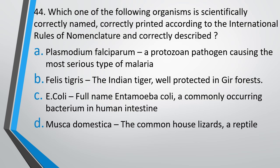Question number 44: Which one of the following organisms is scientifically correctly named, correctly printed according to the international rules of nomenclature, and correctly described? Options: A) Plasmodium falciparum — a protozoan pathogen causing the most serious type of malaria; B) Felis tigris — the Indian tiger well protected in Gir forest; C) E. coli, full name Entamoeba coli — a commonly occurring bacterium of human intestine; D) Musca domestica — the common house lizard, a reptile. The correct answer is option A, Plasmodium falciparum — a protozoan pathogen that causes the most serious type of malaria.